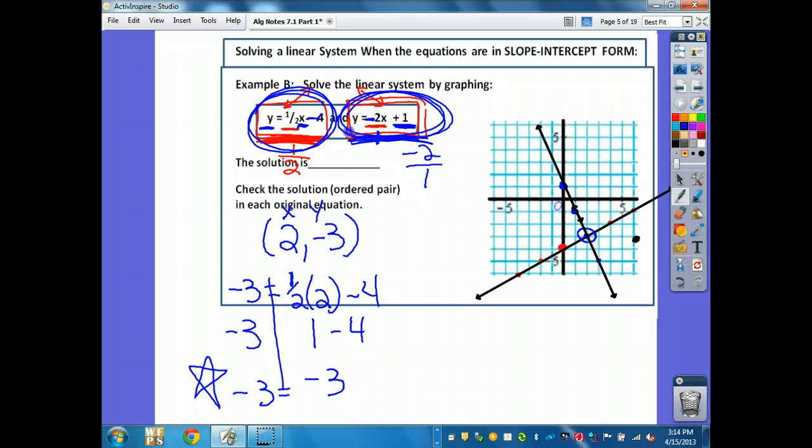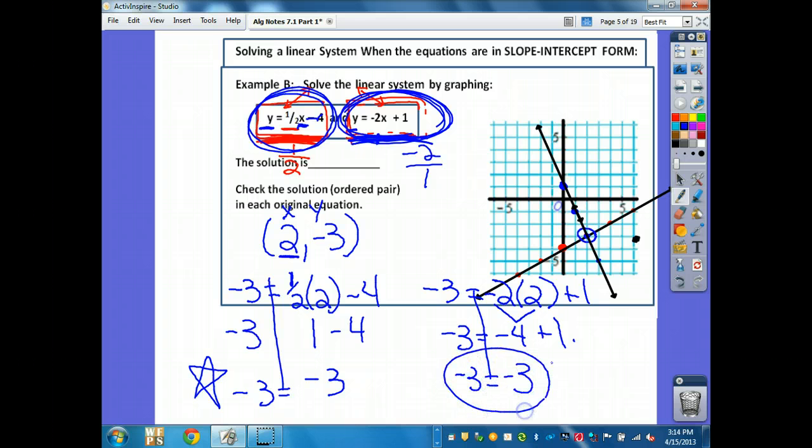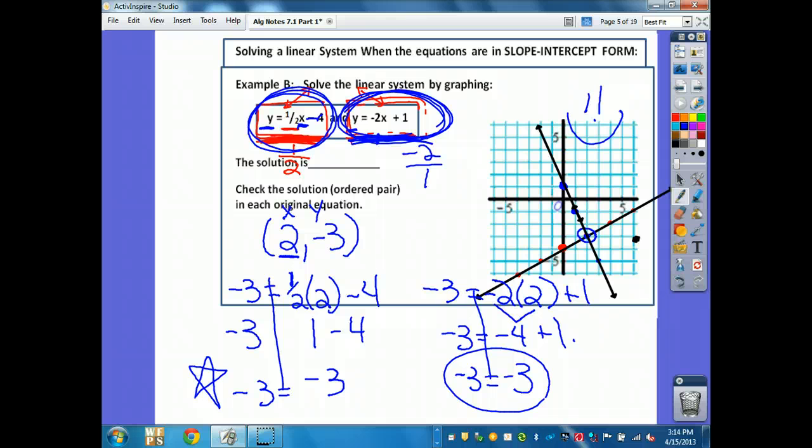Now let's check it in the second equation. y, which is negative three. Does that equal a negative? That was a negative, wasn't it? y equals a negative two times what's my x? Two plus one. Negative three. Does that equal? What's negative two times two? Negative four. Then bring down my plus one. Did we do it all right? Yes. True. We did it right. It worked in both of them. We get an A on that one. We just proved that it worked.